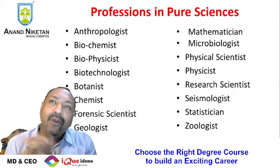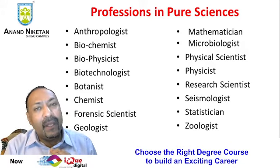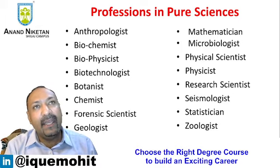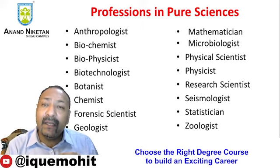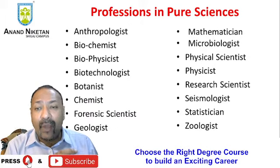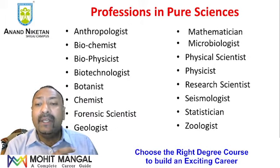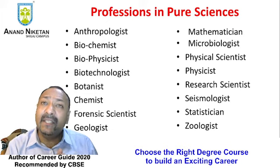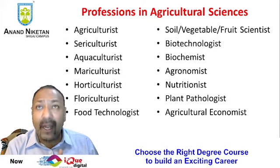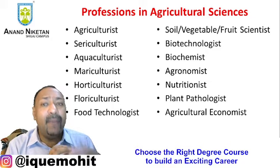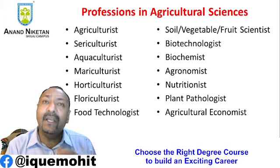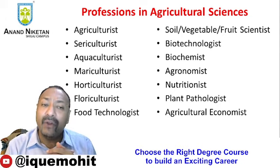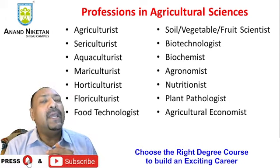Both Science A and Science B students can also go into pure sciences or agricultural sciences. In pure sciences: anthropologist, biochemist, biophysicist, biotechnologist, botanist, chemist, forensic scientist, geologist, mathematician, microbiologist, physical scientist, physicist, research scientist, seismologist, statistician, and zoologist. In agricultural sciences: agriculturist, sericulturist, aquaculturist, mericulturist, horticulturist, floriculturist, food technologist, soil scientist, vegetable scientist, fruit scientist, biotechnologist, biochemist, economist, nutritionist, plant pathologist, and agricultural economist.